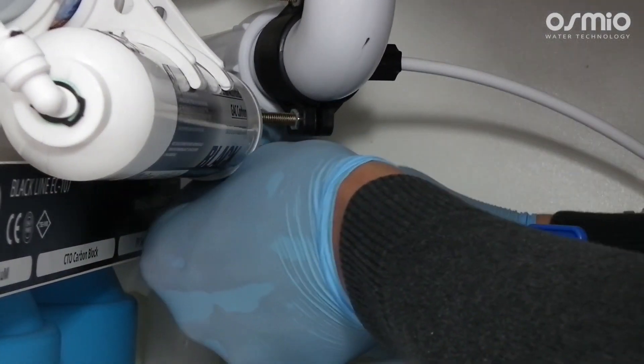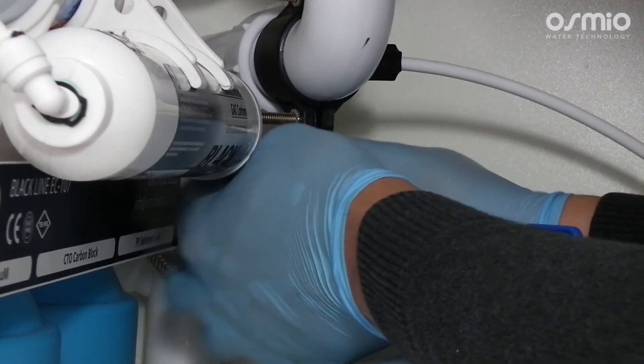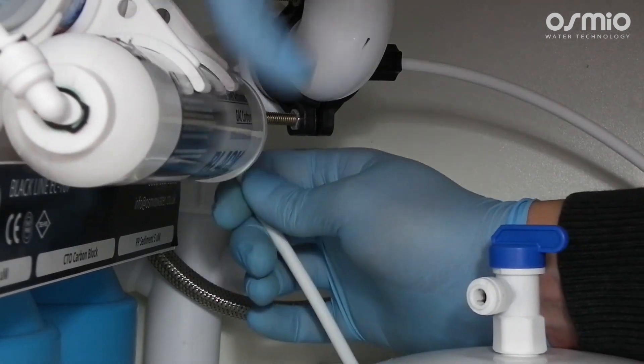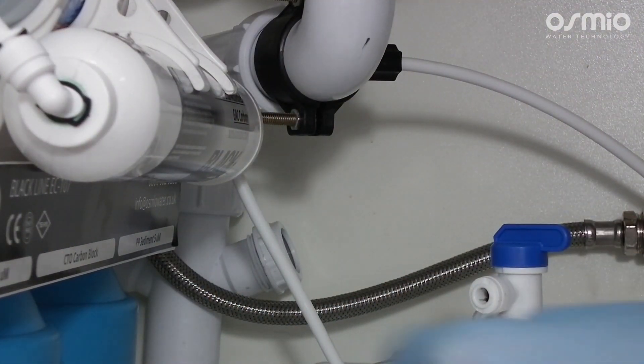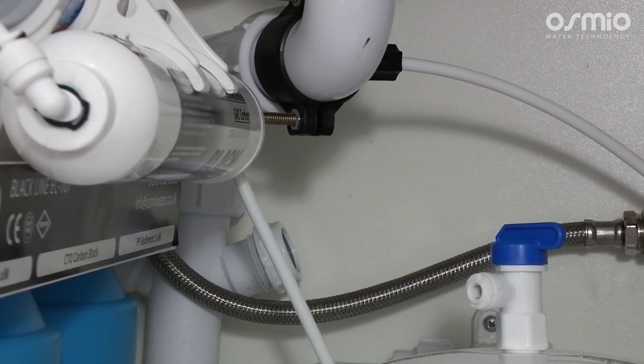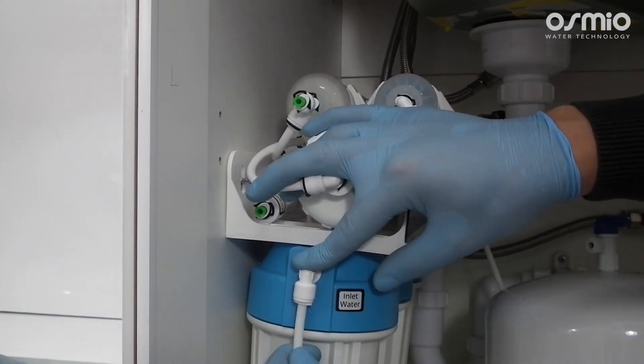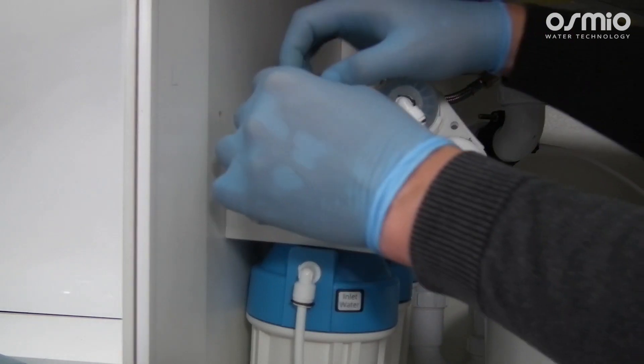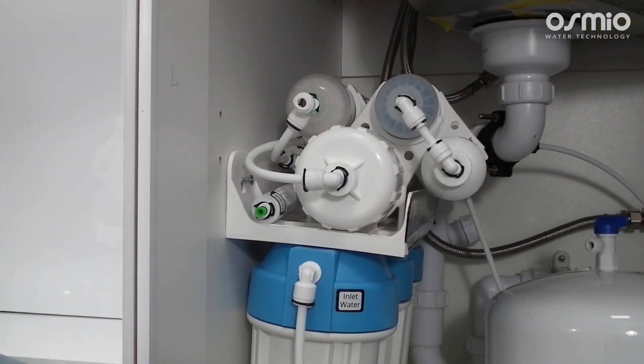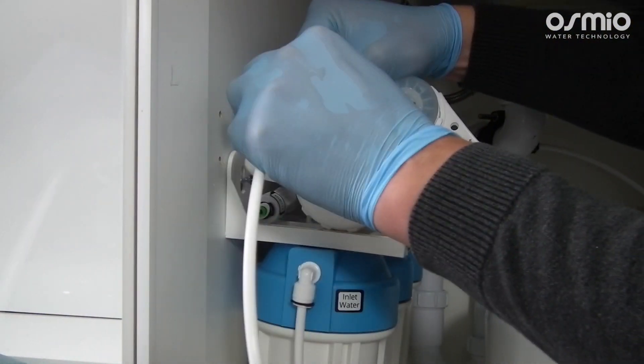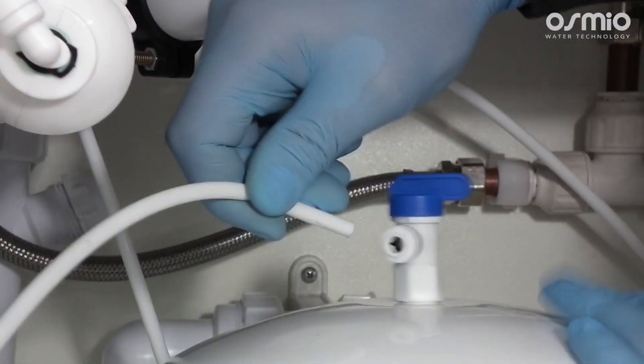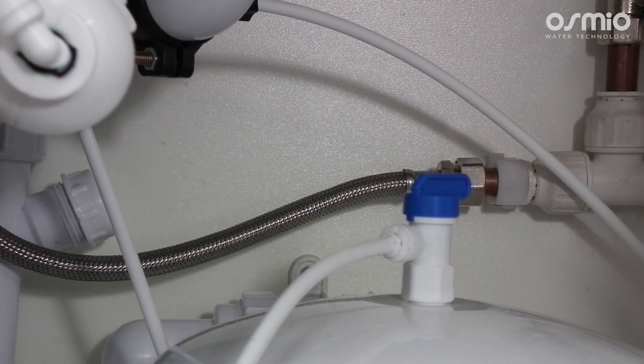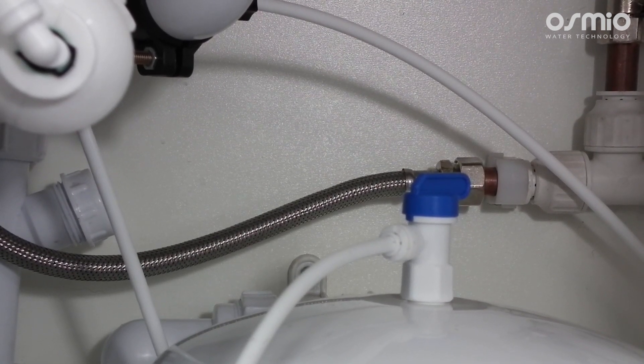Now we are ready to connect the unit. Start with the coconut shell post filter located at the top and connect it to the tap with the white tubing supplied in the kit. Use white tubing to connect the inlet water elbow fitting on the left to the water feed connection on the main unit. Connect the tubing to the T-piece fitting on the left hand side of the post alkaline filter and to the fitting at the top of the tank. Open the valve at the top of the tank so that the lever is in line with the tubing, which enables purified water to be stored inside the tank.